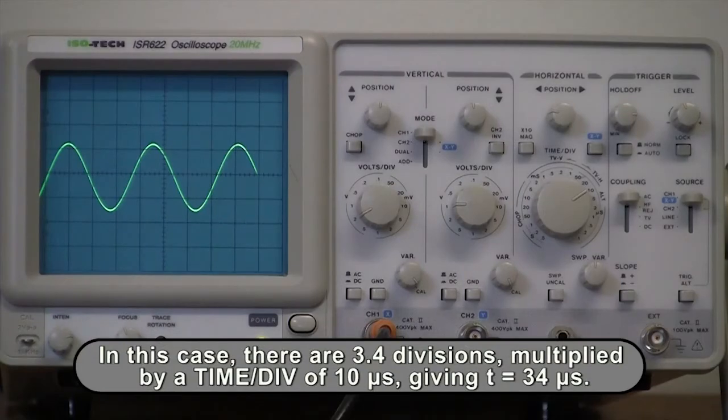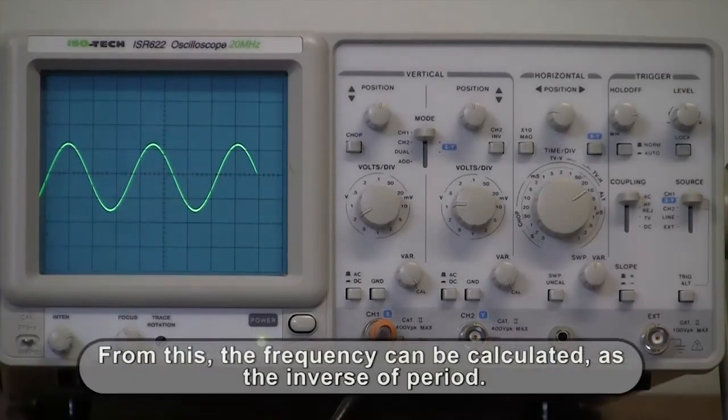In this case, there are 3.4 divisions, multiplied by a time per division of 10 microseconds, giving a period of 34 microseconds. From this, the frequency can be calculated as the inverse of the period.